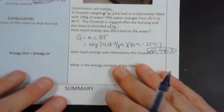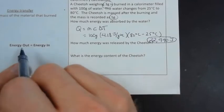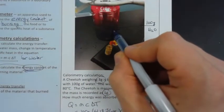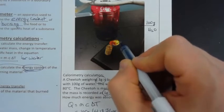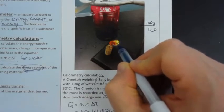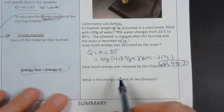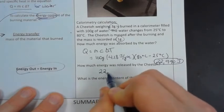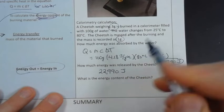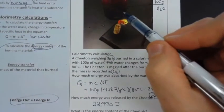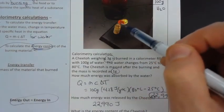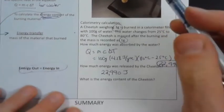Now the next part is the easy but tricky bit that uses this concept here. If the amount of energy going into the water we can calculate, we can assume that that's the amount of energy that's leaving the Cheeto as it's burning. How much energy was released by the Cheeto? It has to be the same amount, because the water inside this can didn't spontaneously warm up on its own. It went from 25 to 80 degrees because of that fire energy that was released as the Cheeto burned.